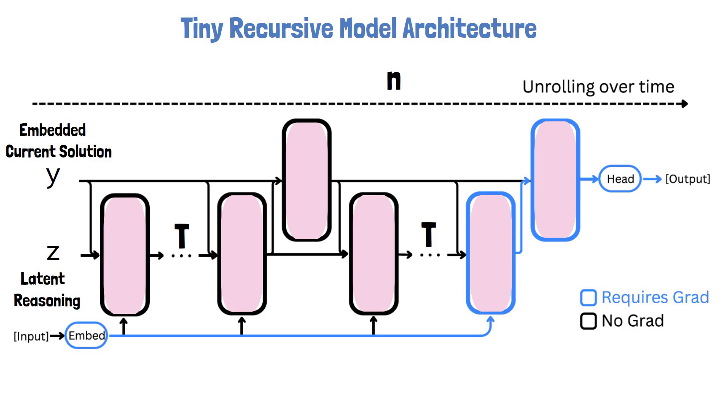One thing that's different from standard recurrent networks is the use of two latent features for different purposes. Another difference lies in how the model is trained.